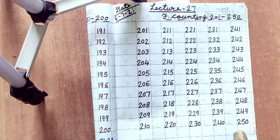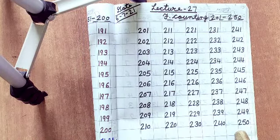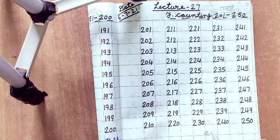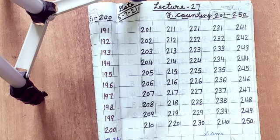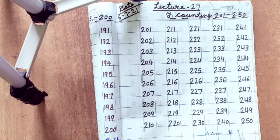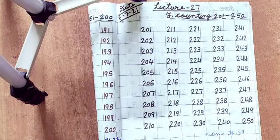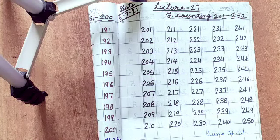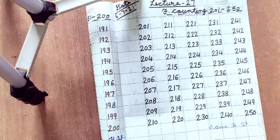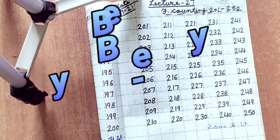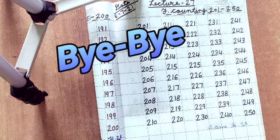After completing this line you can write the same HW. Understood all of you? Next phase you have to mention the same HW. So learn all the counting. Understood all of you? All the counting you have to learn at home. See you soon next class. Bye bye all of you.